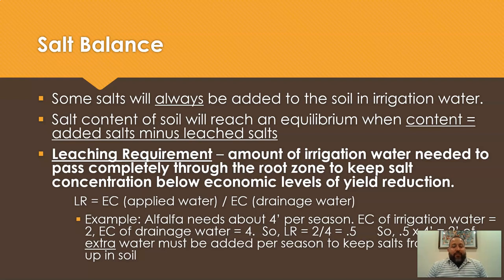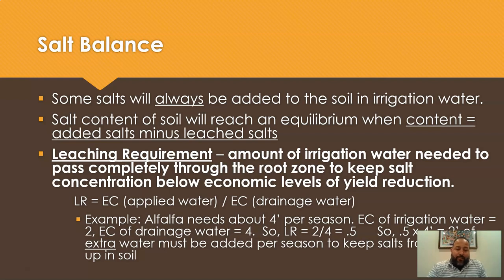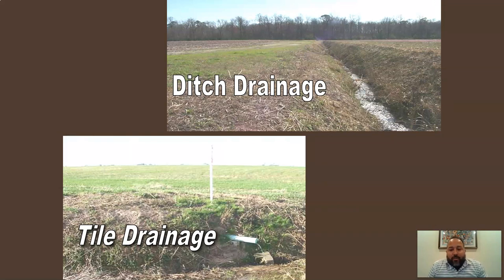Here's an example: alfalfa needs about 4 feet per season. The EC of irrigated water equals 2, EC of drainage water equals 4. So 2 divided by 4 is 0.5, and 0.5 times 4 feet equals 2 feet. We need 2 feet of extra water added per season to keep salts from building up in the soil. We can accomplish this using tile drainage or ditch drainage to get rid of that excess water and keep it from building up on the soil.